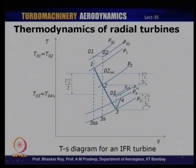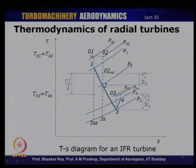The stagnation temperature does not change in the diffuser — T03 and T04 are the same. Across the turbine, the drop in stagnation temperature is attributed to the rotor. The difference between T01 and T03 is the work done by the rotor — this is the enthalpy drop which the turbine converts into useful work output.